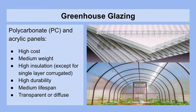Another option for greenhouse glazing are polycarbonate and acrylic panels. These are plastics that are generally quite expensive, coming at a high cost. They're medium in weight between glass and the polyethylene film. They can provide various levels of high insulation, unless we're talking about the single layer corrugated variety. They're usually quite high in durability, have a medium lifespan of around 20 years, and they can be transparent or diffuse as well. Certain types can also be bent to a certain degree.